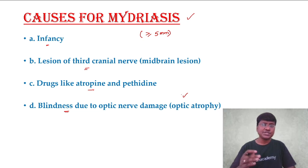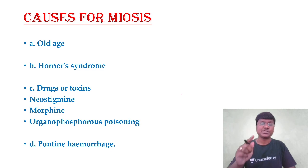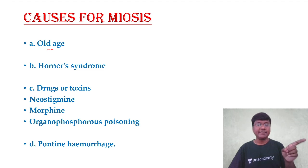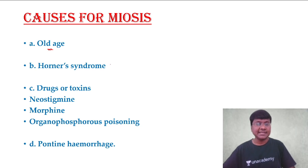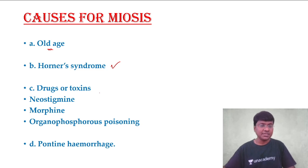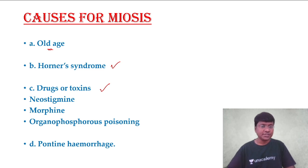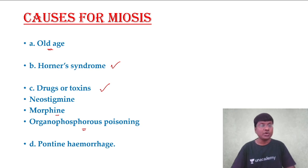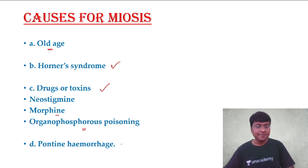Conditions where you have miosis — constriction of the pupil — include old age, Horner's syndrome where there is a defect in the sympathetic trunk, drugs like neostigmine (a cholinergic drug), morphine (an opioid), and organophosphorus poisonings which have a cholinergic effect. All these drugs or toxins cause constriction of the pupil. Finally, pontine hemorrhage causes pinpoint pupils.